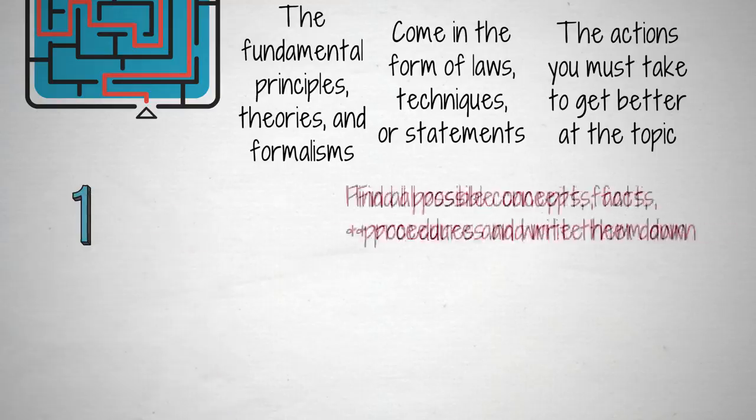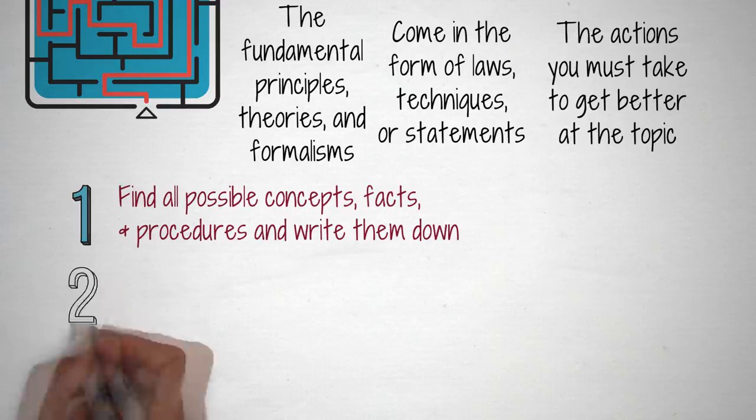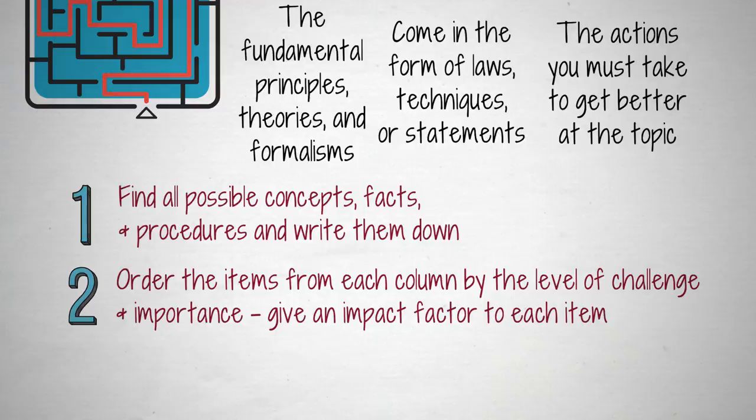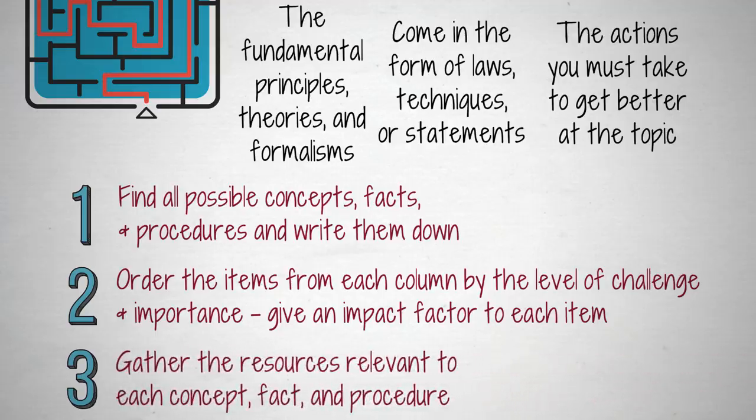One: Find all possible concepts, facts, and procedures, and write them down. Two: Order the items from each column by the level of challenge and importance. Give an impact factor to each item. Three: Gather the resources relevant to each concept, fact, and procedure. Once you finish, you'll have a good knowledge tree for the topic.